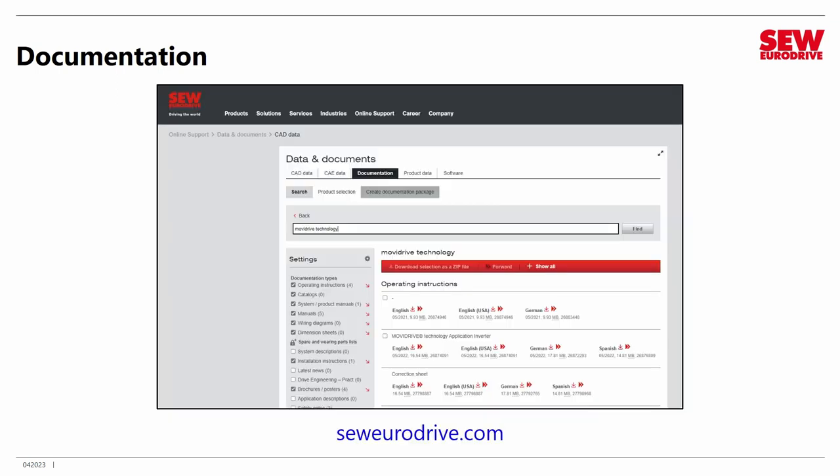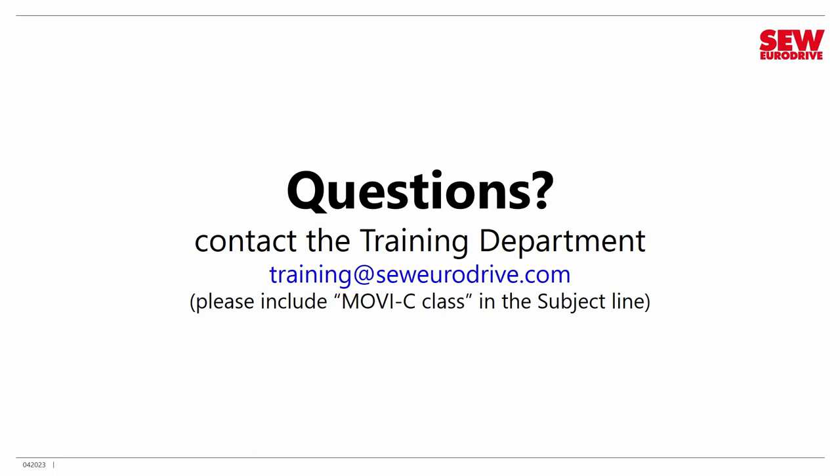To find these on the website, go to seweurodrive.com, click Online Support, Data and Documents, change from the CAD data to the Documentation tab, and type MoviDrive technology in the search. The list will come up and you can download those PDFs.